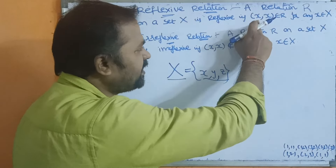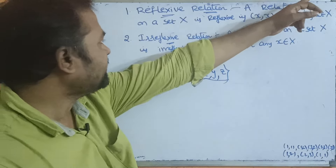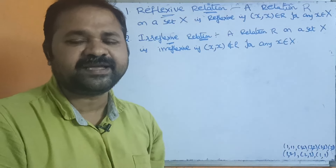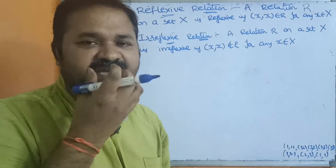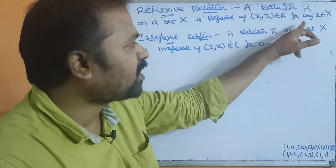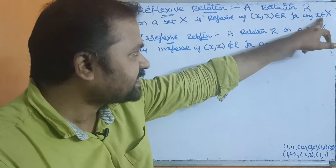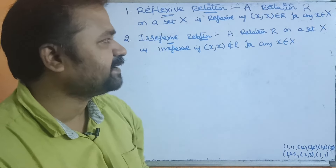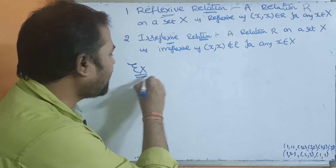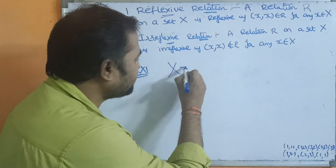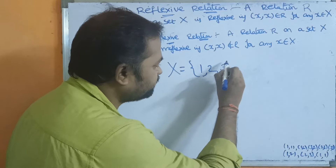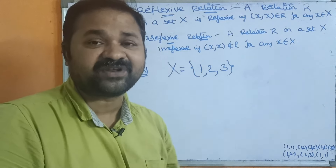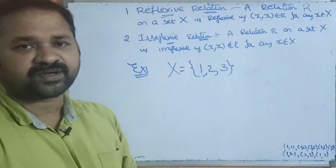Capital X means the name of the set; small x means an element of the set. A relation R on a set X is reflexive if (x, x) belongs to R — that means the element present in the set belongs to R for any x belonging to X. Let us take an example: let set X have elements 1, 2, 3.